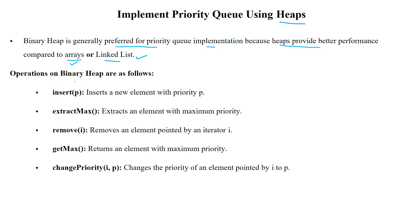The operations in the priority queue are: inserting a node into the priority queue, finding the maximum element from the priority queue which has the maximum priority, deleting the element from the priority queue and returning the element with maximum priority. If you want to change the priority, you can apply the change priority operation.